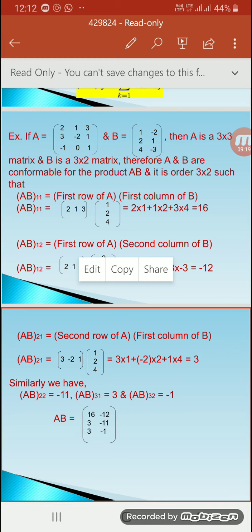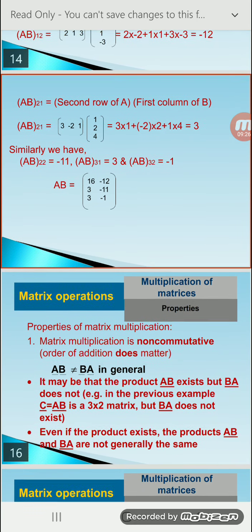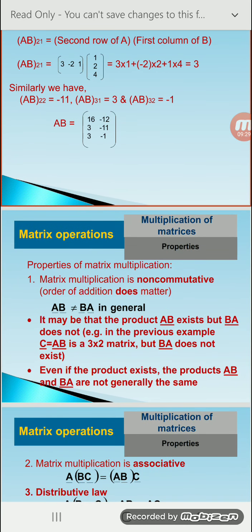The condition is: number of columns of A must equal number of rows of B. Matrix multiplication is non-commutative — that means order does matter. AB is not equal to BA in general. We can find AB, but we may not be able to find BA because the number of rows and columns would differ.